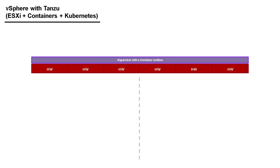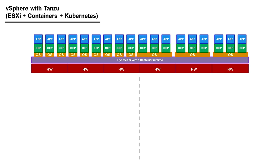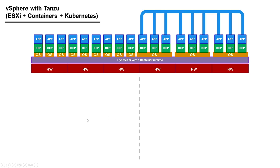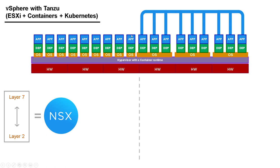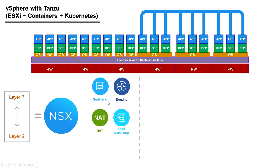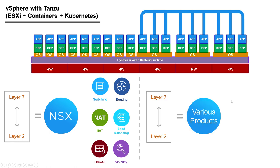We're going to build virtual machines and containers on the same hypervisor with a container runtime, most likely Docker and Kubernetes. We've still got that flat or hidden network around the back, which we can't do any security or visibility on using traditional tools. For these virtual machines, we're going to use NSX to provide all those services between layer two and layer seven — switching, routing, NAT, load balancing, firewalling, and visibility. That's straightforward on the VM side. But if we want to do something on the container side, traditionally you'd use various products to provide those layer two to layer seven services.